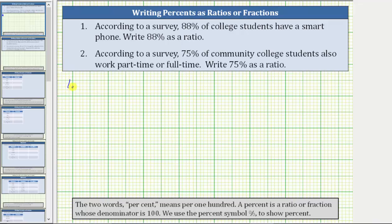So number one, we are given 88%, which means 88 per 100, or 88 out of 100, and therefore as a ratio or fraction, we have 88 over 100.